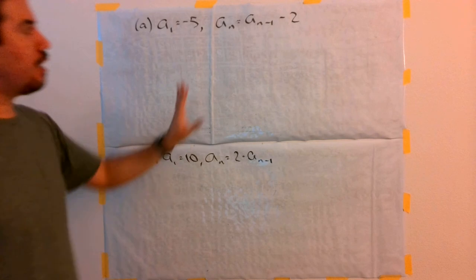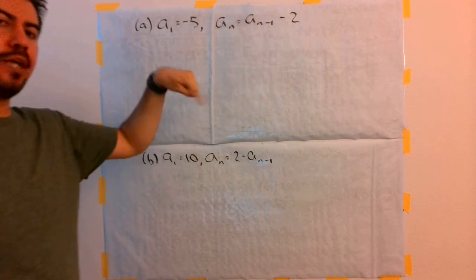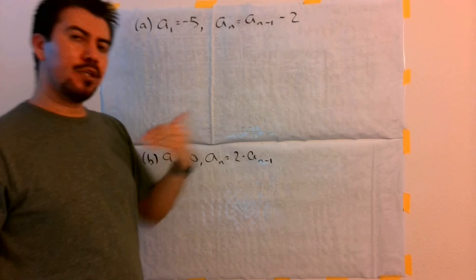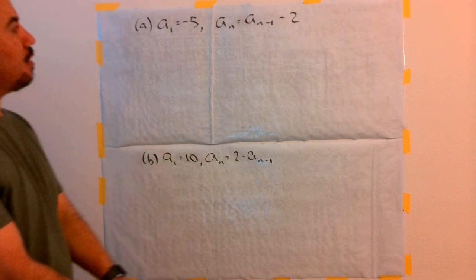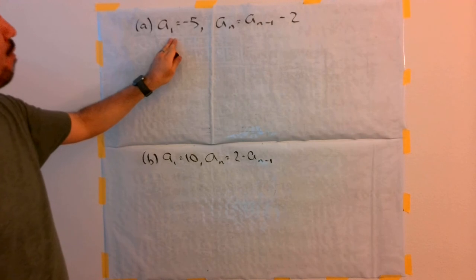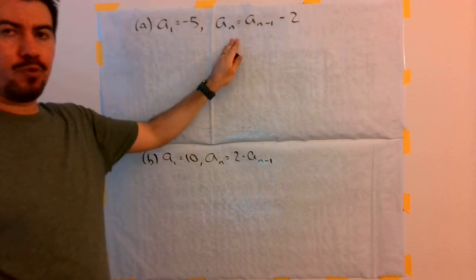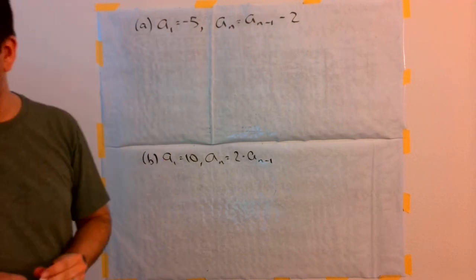I want to translate that from a recursive rule to an explicit rule, which is what we did in a previous section. Now, we're going to see, given we have the first term and the recursive rule, can we translate that to an explicit rule?